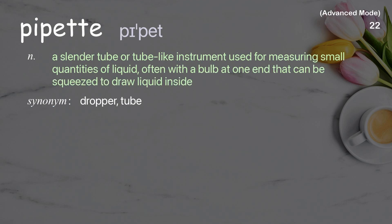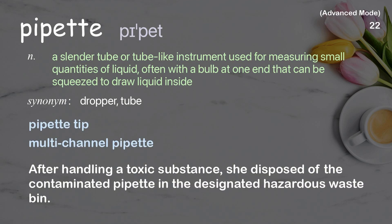Pipette: A slender tube or tube-like instrument used for measuring small quantities of liquid, often with a bulb at one end that can be squeezed to draw liquid inside. Examples: Pipette tip. Multi-channel pipette. After handling a toxic substance, she disposed of the contaminated pipette in the designated hazardous waste bin.